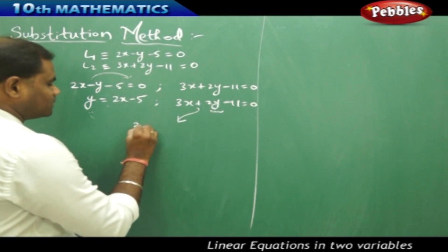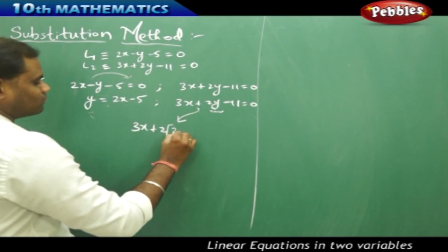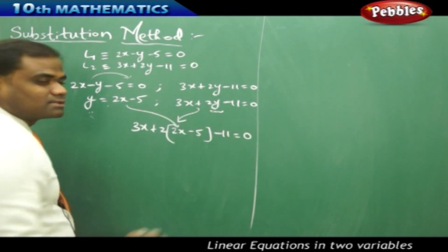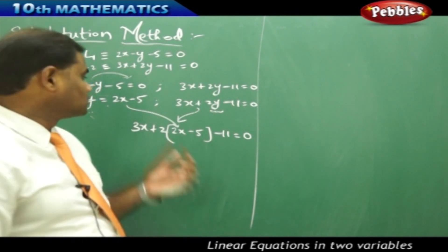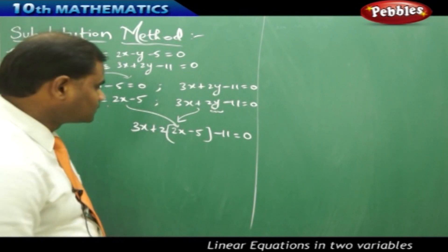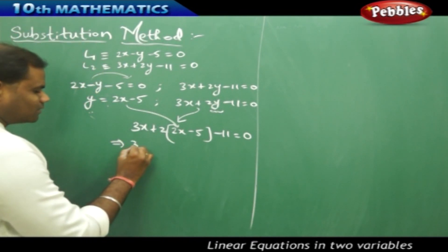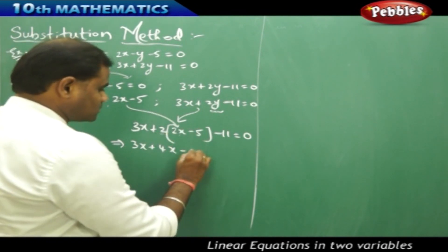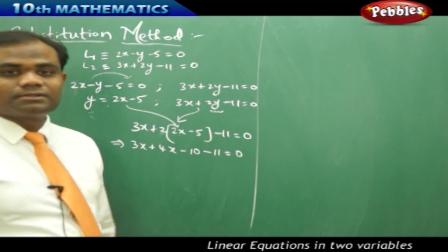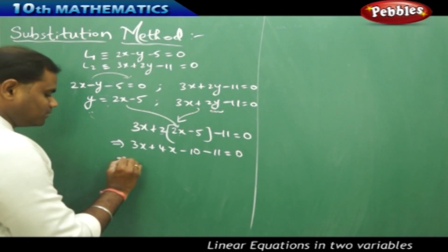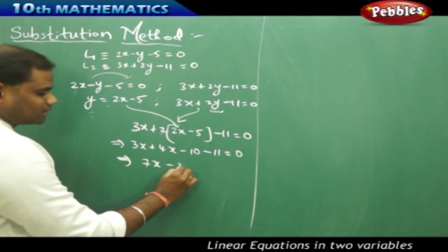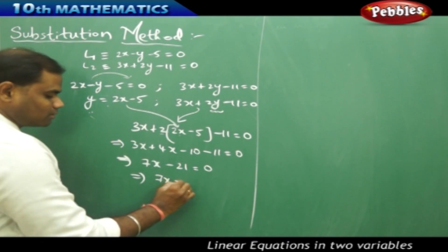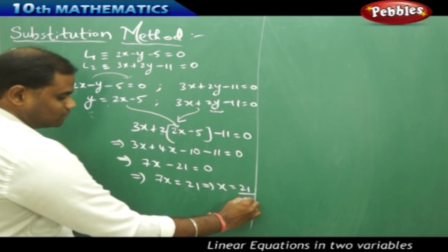Substituting, I get 3x plus 2 times (2x minus 5) minus 11 equals 0. Expanding: 3x plus 4x minus 10 minus 11 equals 0, which simplifies to 7x minus 21 equals 0. Taking all x terms to one side and constants to the other, I get x equals 21 over 7.